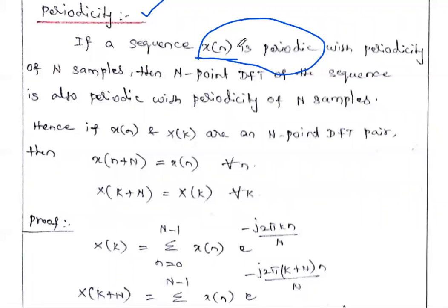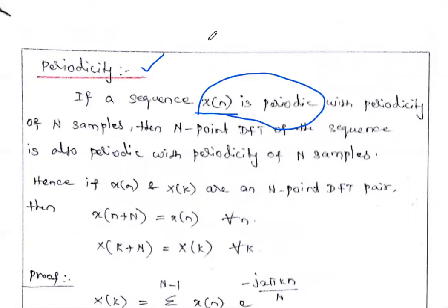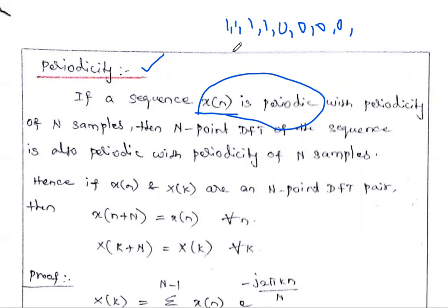For example, take X(n) equal to four ones and four zeros, then again four ones and four zeros. So X(n) is periodic with 8 samples. The first 8 samples are four ones and four zeros — this is one cycle, one period of N samples. After this 8-sample period, the same data repeats: four ones and four zeros. So this X(n) sequence is periodic with respect to 8 samples.